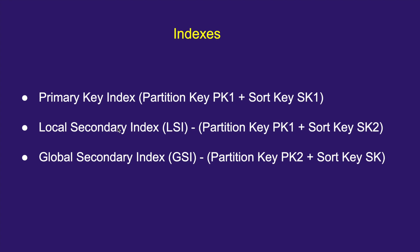There is also the concept of projected attributes — you can choose which attributes are part of your secondary indexes. With a local secondary index, you can query both the projected attributes and the other non-projected attributes. With a global secondary index, if you did not choose an attribute — say, 'first name' — as a projected attribute, you cannot retrieve data for that attribute when using that GSI's partition key in your query.